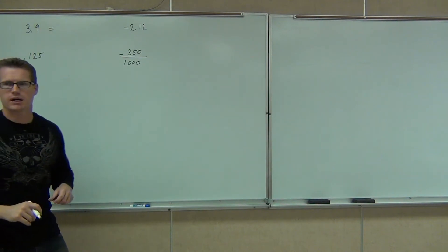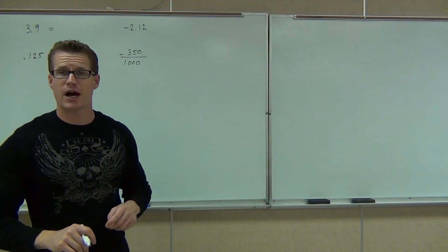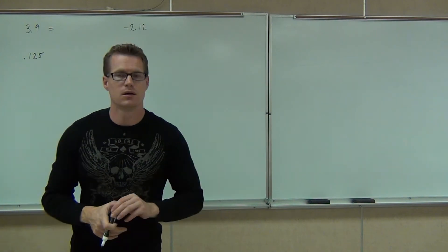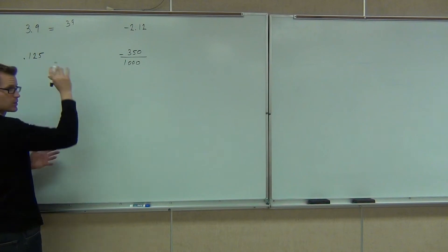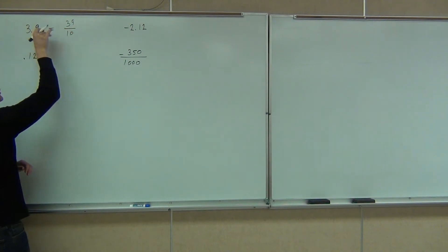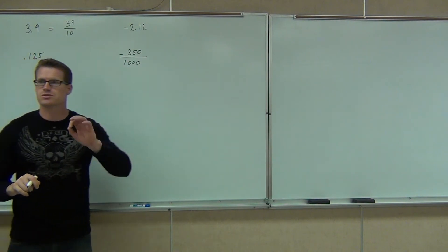How about the 3.9? 3.9 should be 39 over what? 100. So 39 over 10? 39. It's got to be a whole number. Over how much? Not 100. You only move to one spot. It should be 10. It ends in tenths. We should have it over 10.